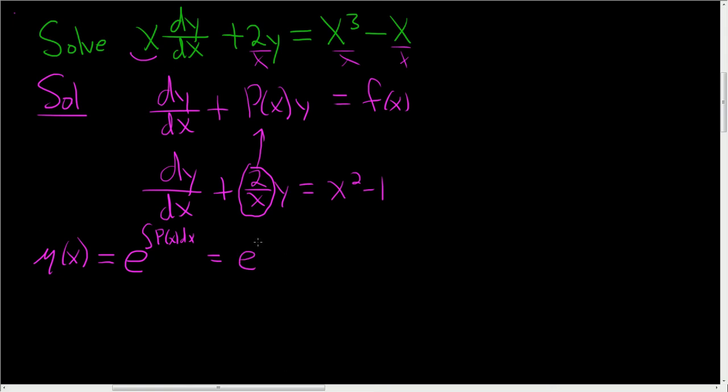Well, p(x) is 2 over x. So this is 2 over x dx. So this is equal to 2 natural log absolute value of x. So this is e to the natural log of x squared, which is just x squared.